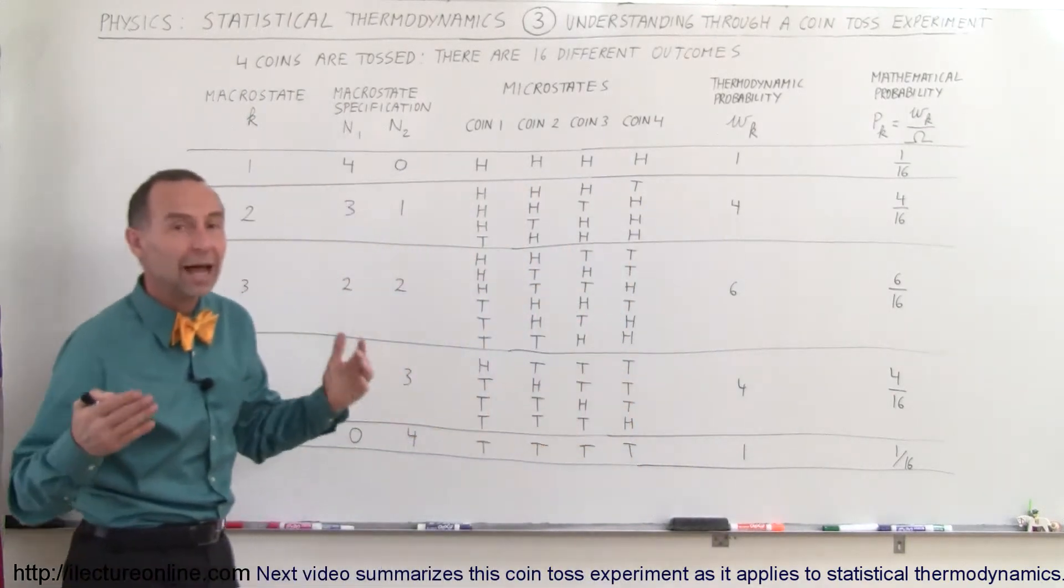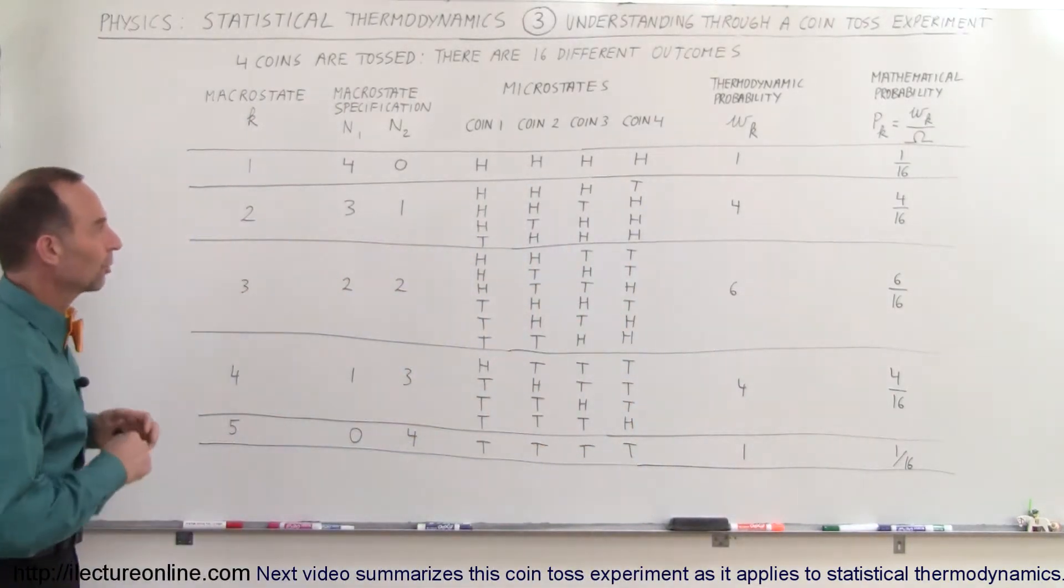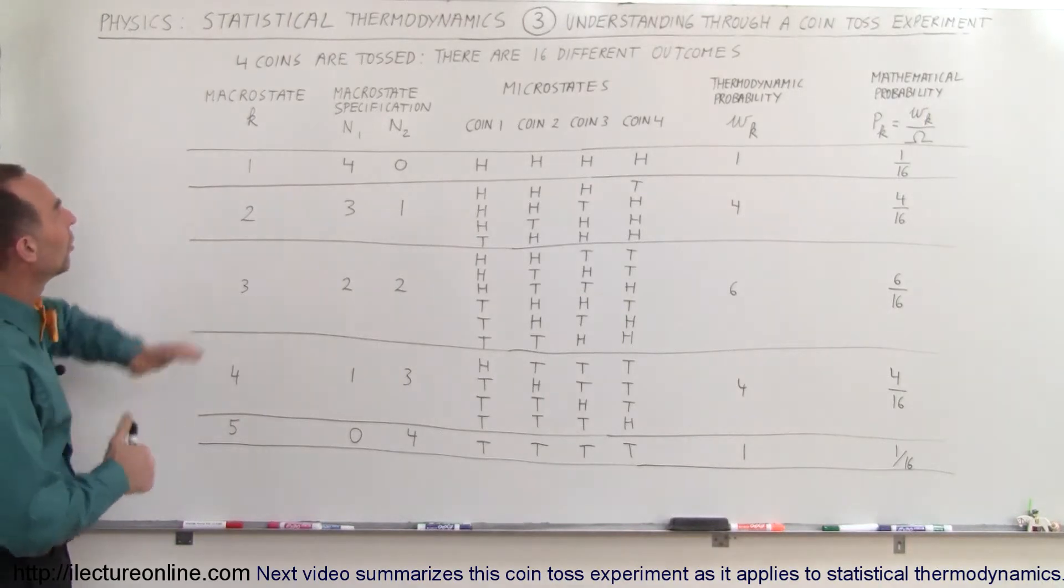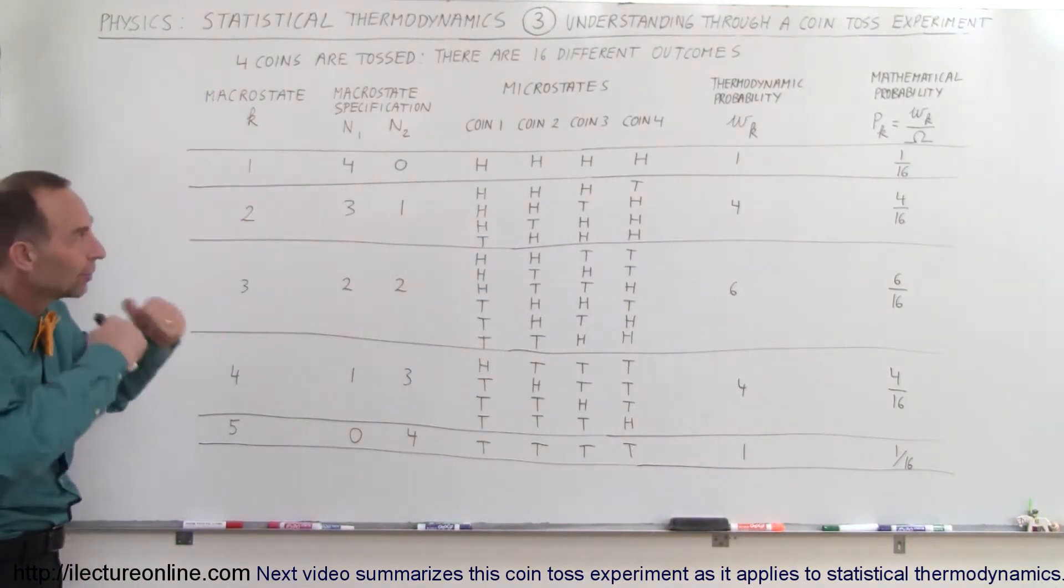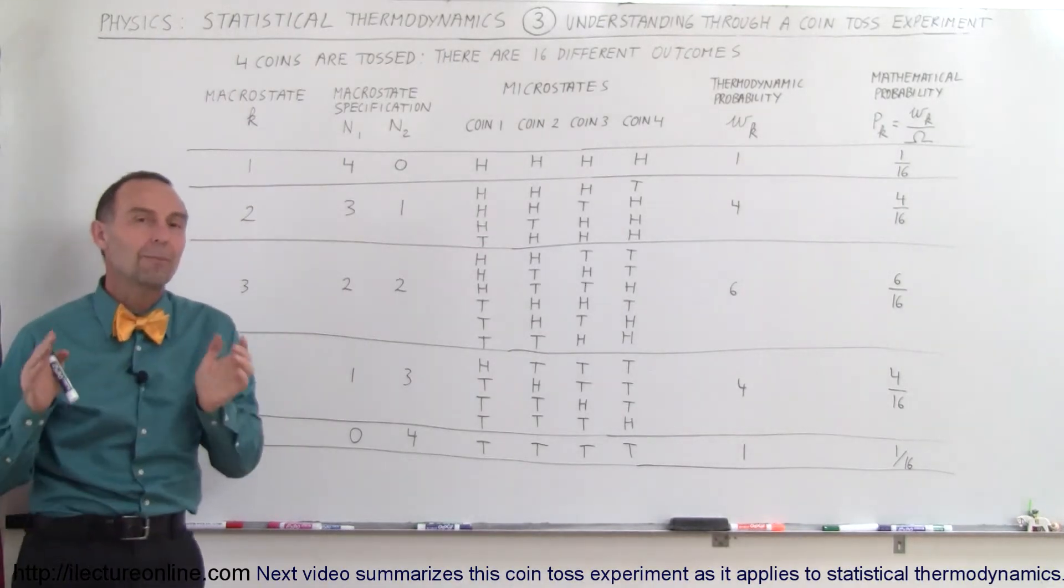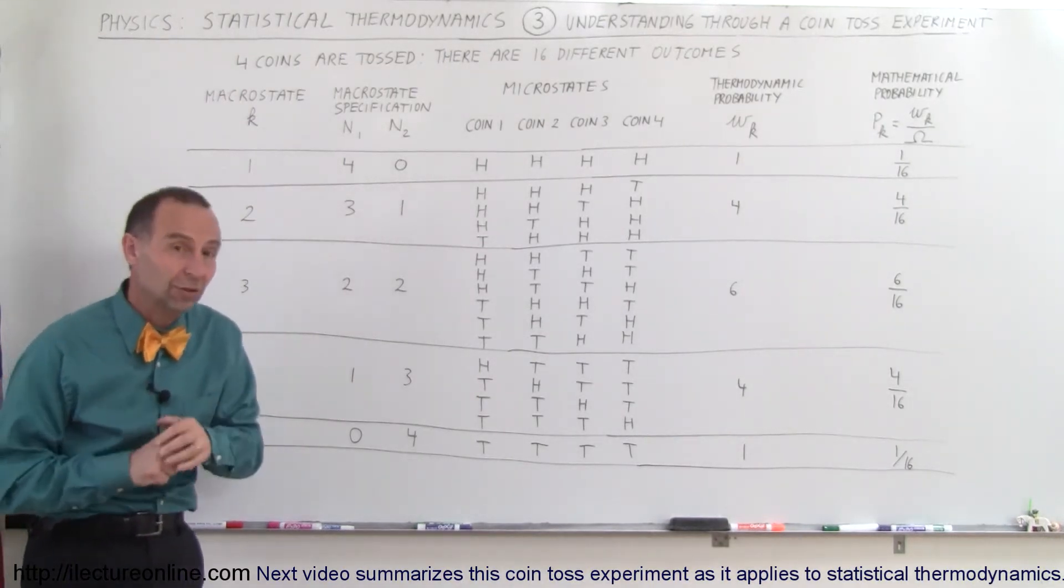So what do those symbols mean and how do we use them in statistical thermodynamics? First of all, we're going to take four coins, toss them up in the air, they're going to land, and there's 16 possible outcomes to that particular experiment.